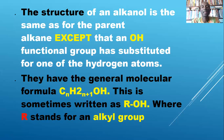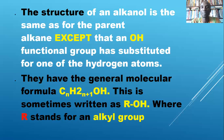Alkanols have the general molecular formula CnH2n+1OH — instead of the alkane's CnH2n+2, the second H is replaced by OH. This is sometimes written as R-OH, where R stands for the alkyl group. The R could be methyl, ethyl, propyl, butyl, or any alkyl group being attached to a hydroxy group.